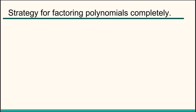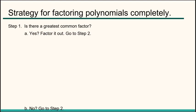The constant is the number with no x's, and the leading coefficient is the big guy out in front of the highest power. So we need a strategy for factoring polynomials completely. Step 1. Is there a greatest common factor? It was like my first example. If yes, factor it out, then go to step 2. If no, just go straight to step 2.